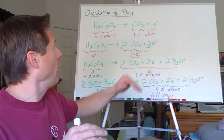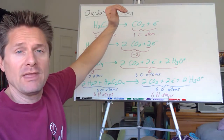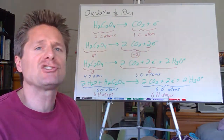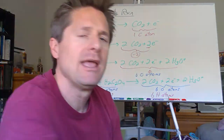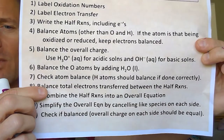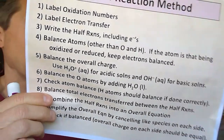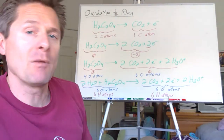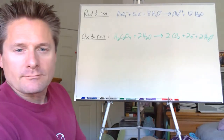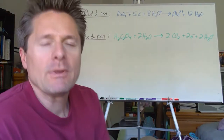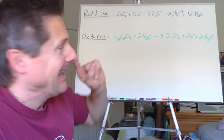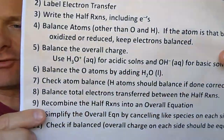Now I'm going to put up the balanced oxidation half reaction and the balanced reduction half reaction side by side, and we'll move on to step eight where we make sure the electrons match. Let's focus in on step eight: the electrons. We need the total number of electrons lost to equal the total number gained.